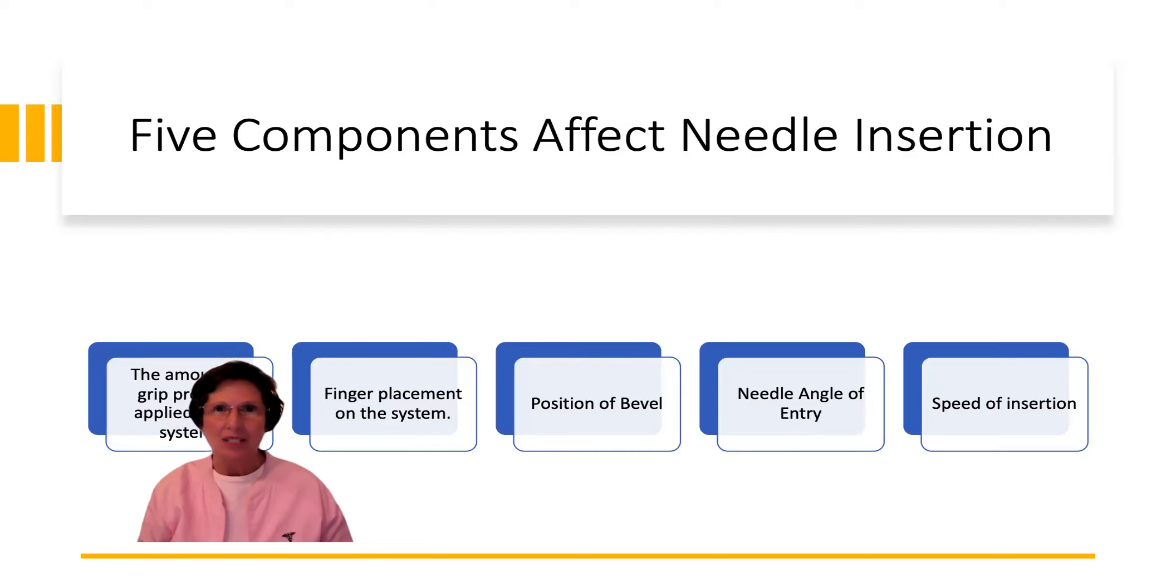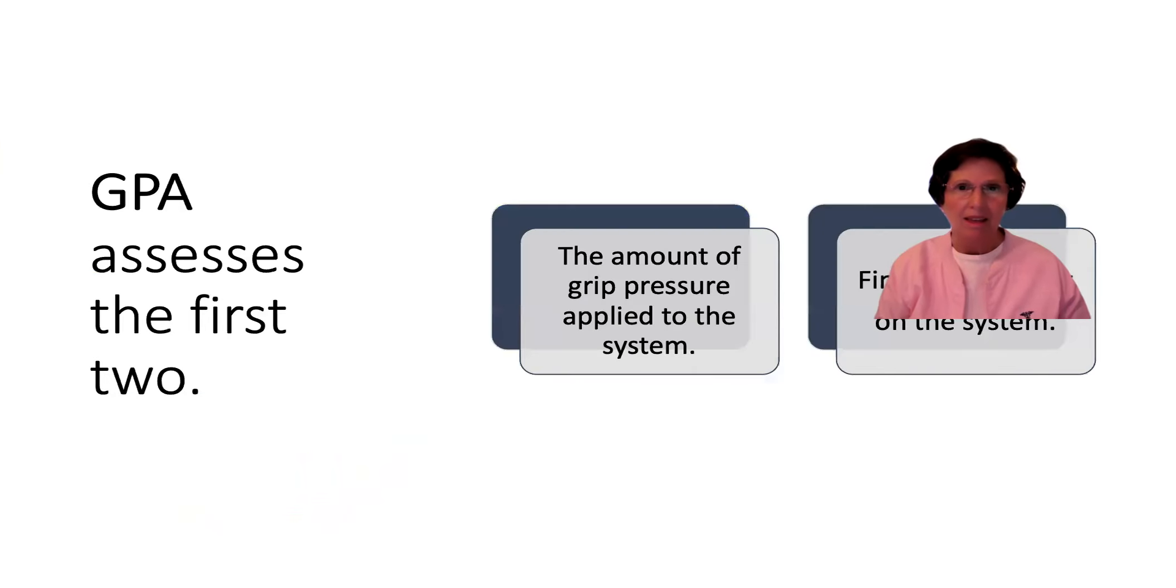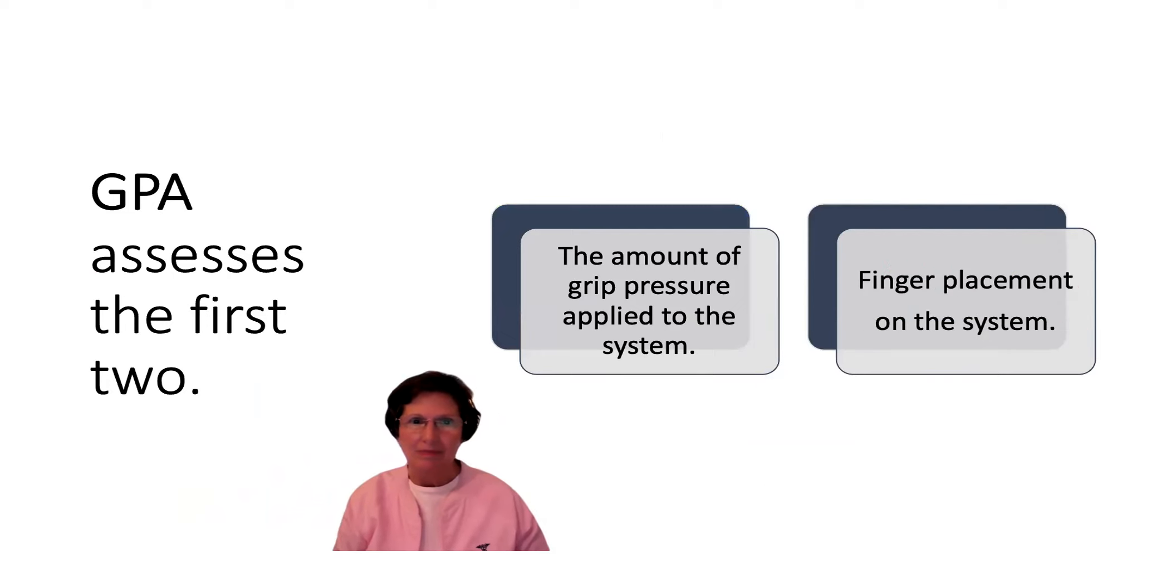So five components affect the needle insertion. The amount of grip pressure applied to the system. Finger placement on the system. Position of the bevel. Needle angle of entry. Speed of insertion. So obviously in this one we're talking about the first and the second component. The amount of grip pressure applied to the system and finger placement on the system. So the GPA assesses the first two.